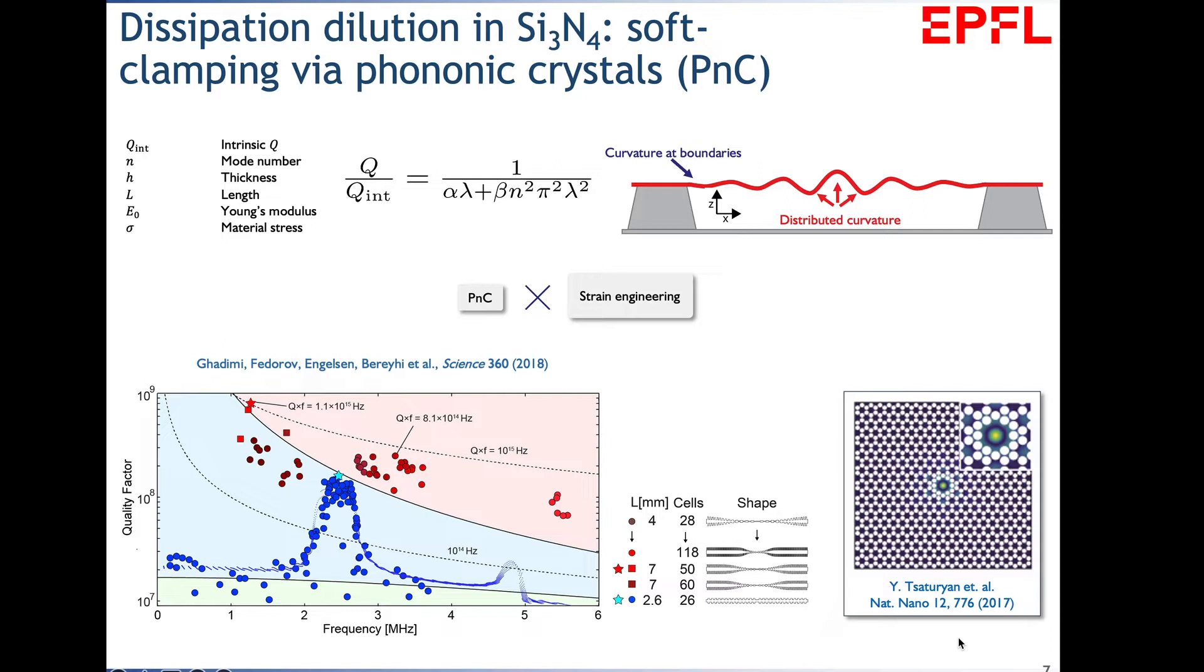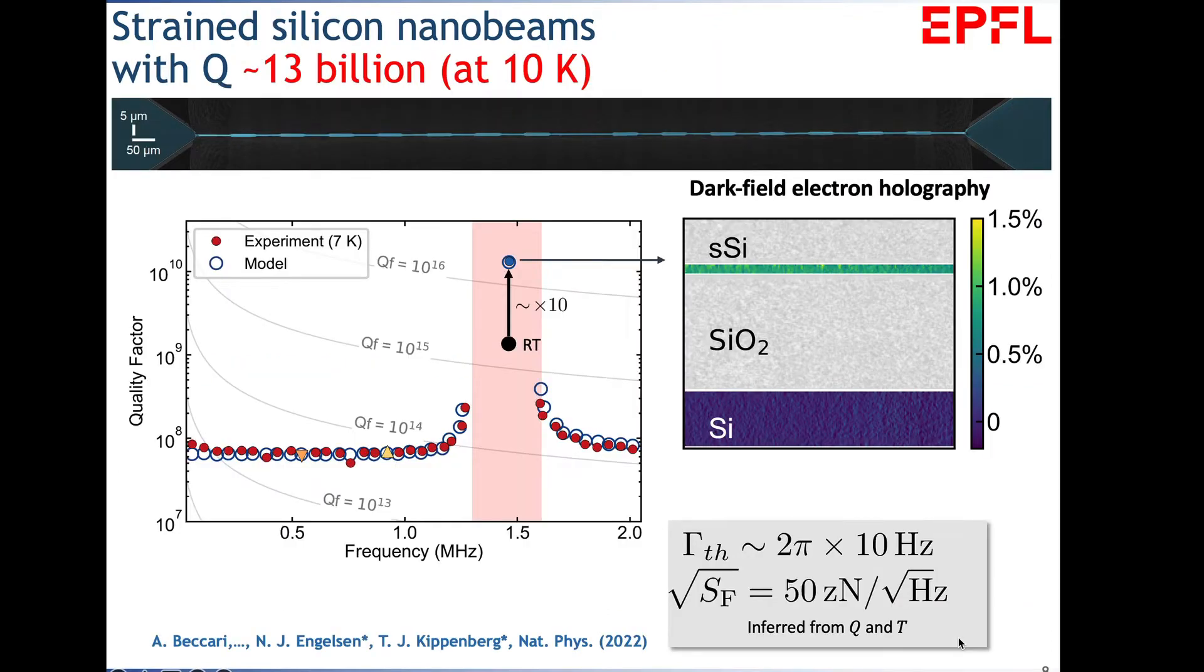A very important realization was from Albert Schleser's group, who showed that if you do soft clamping—engineer the mode shape of the mechanical oscillator—you can suppress clamping losses associated with finite curvature at the anchor point. This isn't a small change; the scaling differs by a factor of length divided by height, many orders of magnitude. This dramatically boosts mechanical quality factor.